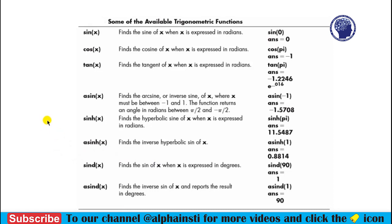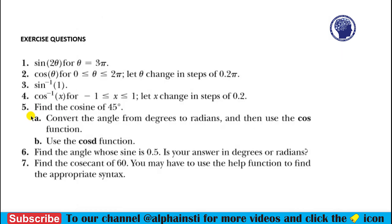Here we have got the exercise questions that you have to solve. In the first question, you have to calculate sin(2θ) for θ equal to 3π, and it will be sin(6π). So you have to calculate sin(6π).